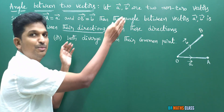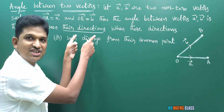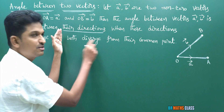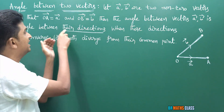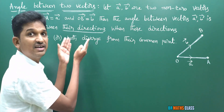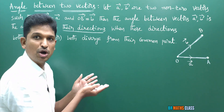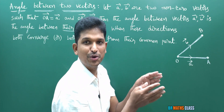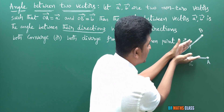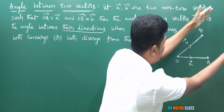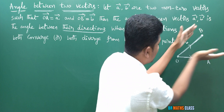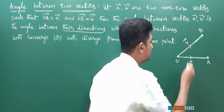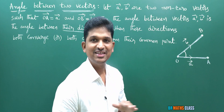I will explain this. The angle between a-bar, b-bar is the angle between their directions when both directions are diverged from their common point. What does 'diverge from common point' mean? This is the common point for OA-bar and OB-bar. Both directions diverge from their common point — from the common point, the directions are moving out, going away. Both directions diverge — this is the angle between vectors a-bar and b-bar.